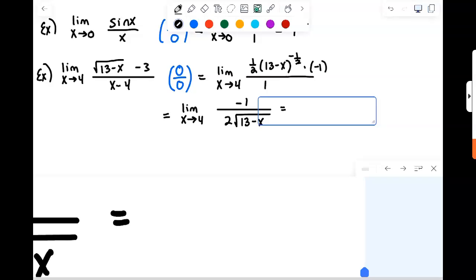Now we can just allow X to become 4. That's going to be 13 minus 4 will be 9, square root of 9 is 3, 2 times 3 is 6. So this thing overall approaches negative 1 sixth.